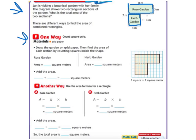And then count the squares that are inside. So in the rose garden there would be 1, 2, 3, 4, 5, 6, 7, 8, 9, 10, 11, 12, 13, 14, 15, 16, 17, 18, 19, 20, 21, 22, 23, 24. 24 square meters.